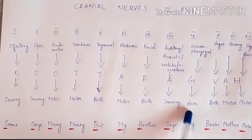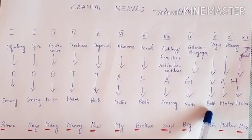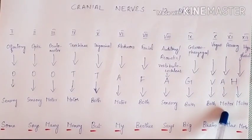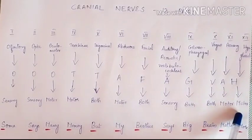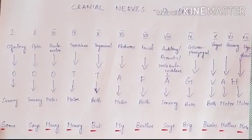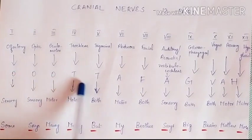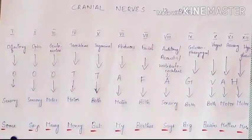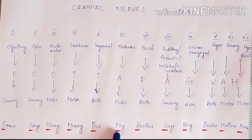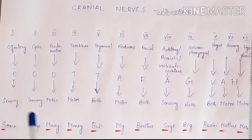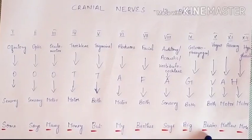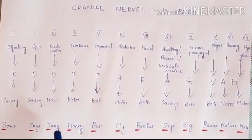Continuing: glossopharyngeal is both sensory and motor, vagus is a mixed nerve, accessory is a motor nerve, and hypoglossal is also a motor nerve. So the cranial nerves can be remembered by 'OOTA FAG VA H,' and their functions by 'Some Says Marry Money But My Brother Says Big Brain Matters More' — S for sensory, M for motor, B for both.